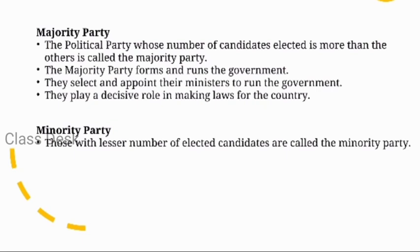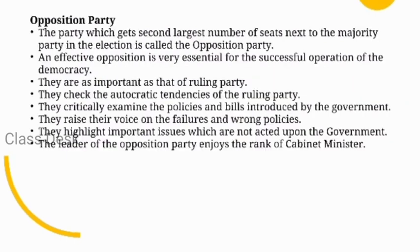The party that contests and wins a majority of votes forms the government. They then select and appoint ministers to run the government, and play a very important role in making the laws of the country. A party with a lesser number of elected candidates is the minority party. The opposition party — those who come second or have fewer votes — is very important for the successful operation of democracy. They raise their voices against the ruling party, examine bills and policies, and check what the government proposes. The leader of the opposition party enjoys the rank of a cabinet minister.